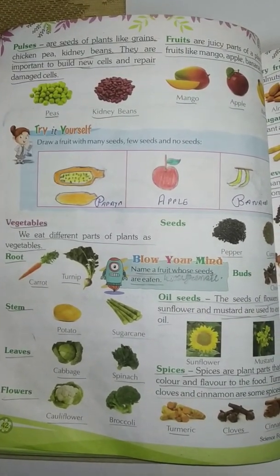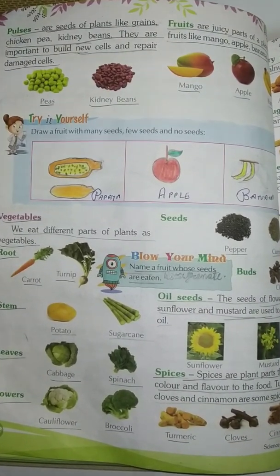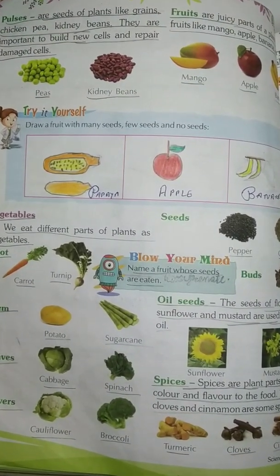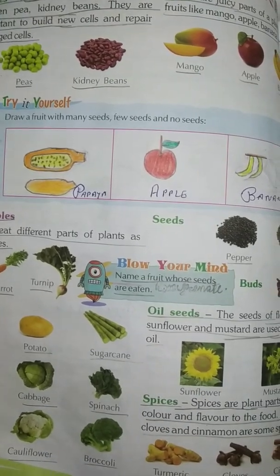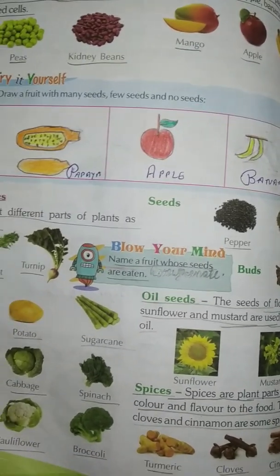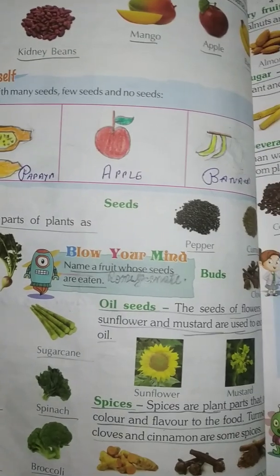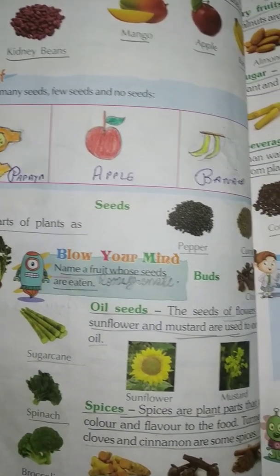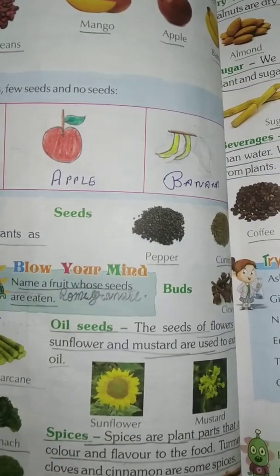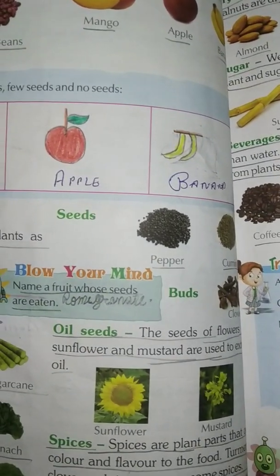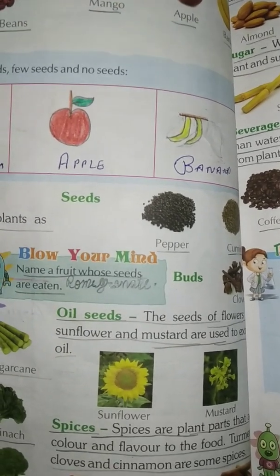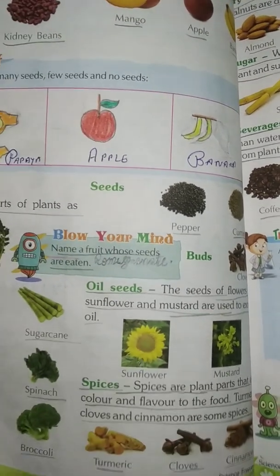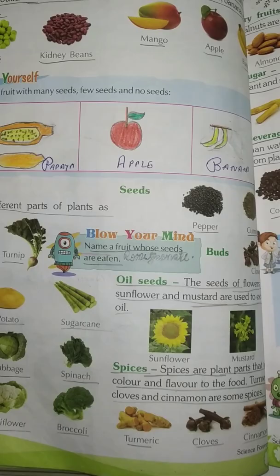Draw a fruit with many seeds, few seeds, and no seeds. For many seeds, draw a papaya. For few seeds, draw an apple. For no seeds, draw a banana. Okay students, draw a papaya, apple, and banana.